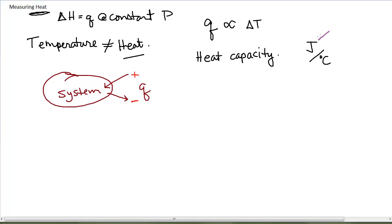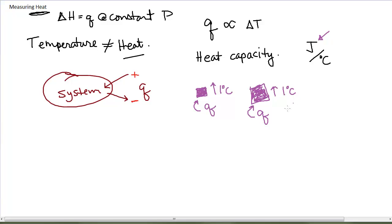The joule is the unit of energy required to elicit that temperature change. Depending on the size or amount of the substance, you'll see different heat capacities. A smaller object requires less heat to raise its temperature by one degree Celsius than a larger object of the same material. So the heat required to raise the temperature is also proportional to the amount of substance. Therefore, instead of just defining a heat capacity, we talk about a specific heat capacity, which has units of joules per gram per degree Celsius.